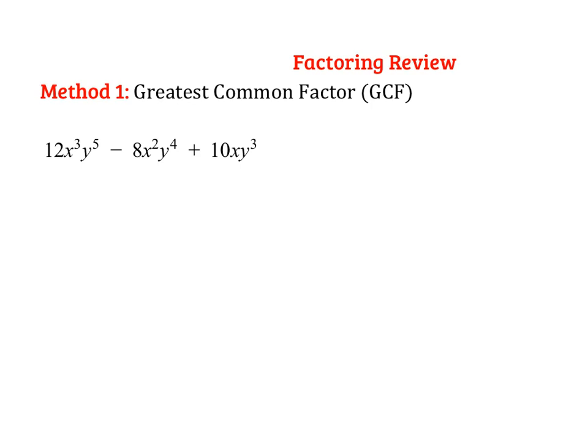So there's a few different methods I want to talk about. The first method is probably the most important one because this is the thing that you should check for with any expression, and it's for a greatest common factor, which I'll call the GCF. So essentially what you're going to do is you're going to look at all of your terms and see the greatest factor that they all have in common. So in this first example, I can see that my GCF, we can start with the numbers. We have 12, 8, and 10, so my GCF is going to be 2 there.